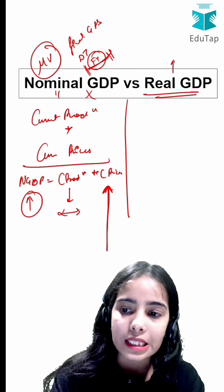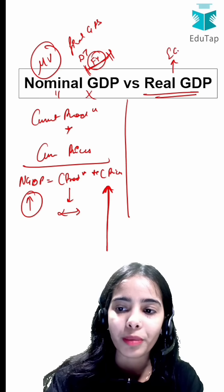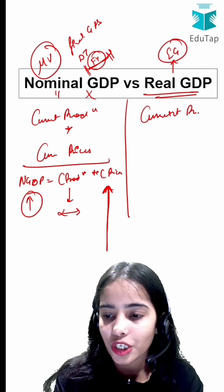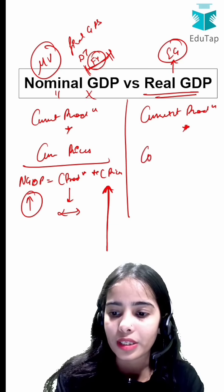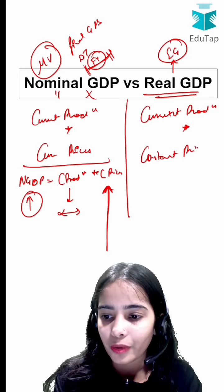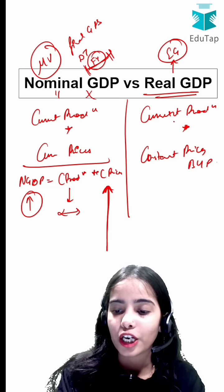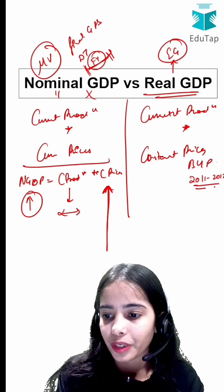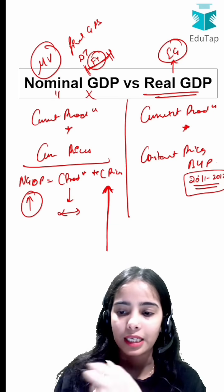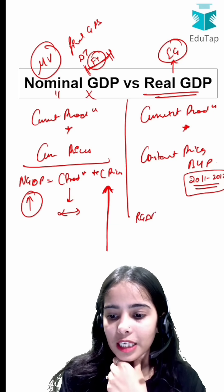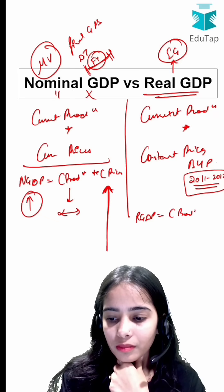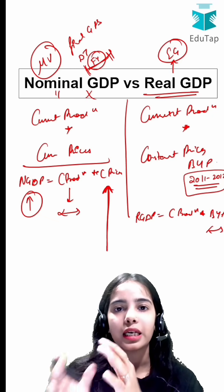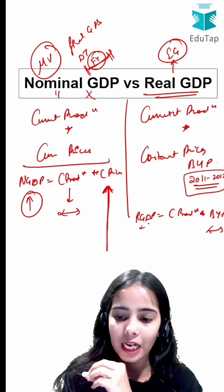Now coming to real GDP, which is considered a better measure of economic growth. Real GDP is calculated by taking the current production and multiplying it with constant prices — that is, the base year price. So real GDP equals current production multiplied by the base year price.